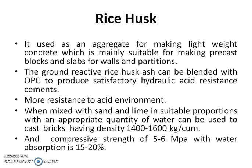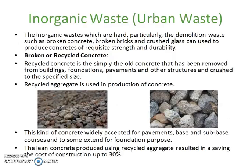Rice husk ash can also be blended with ordinary Portland cement to make it an acid-resisting cement. It can increase the compressive strength on a larger scale. The bricks made using rice husk ash have a compressive strength of 5 to 6 MPa, that is newton per mm squared, with a water absorption of 20%.